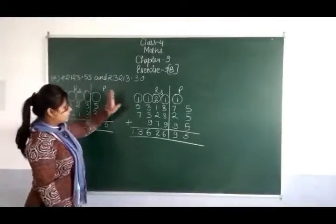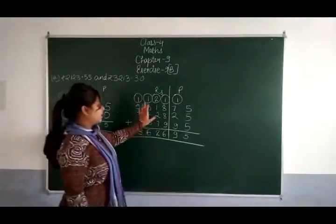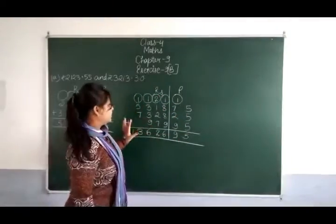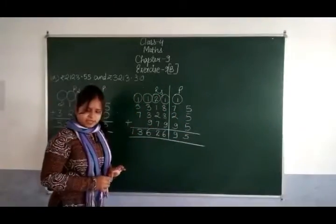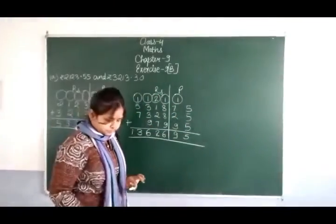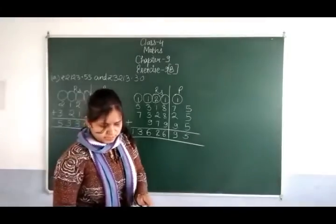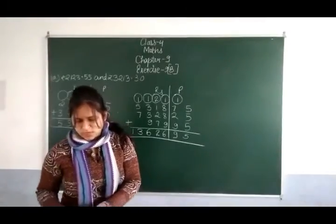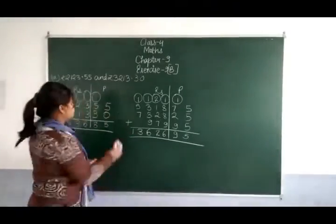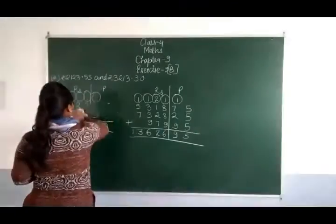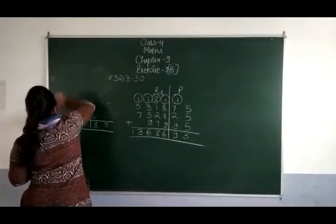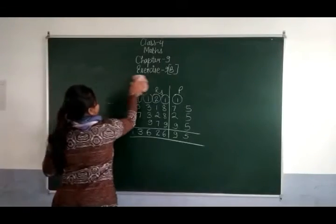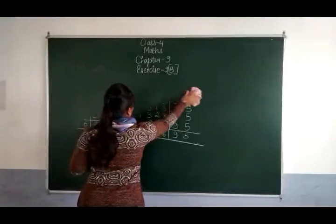तो हमें कुछ भी नहीं करना है। जो भी amount दिया है उसको हम लिखेंगे और उसको add कर देंगे। अब second part है — subtract the following amount. हमें यह सारे amounts को subtract करना है। अभी जैसे हमने add किये थे, उसी तरह से हम subtract करेंगे।